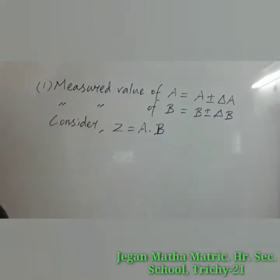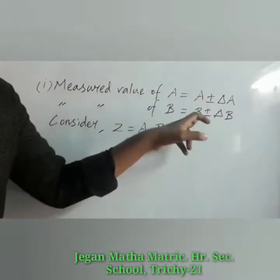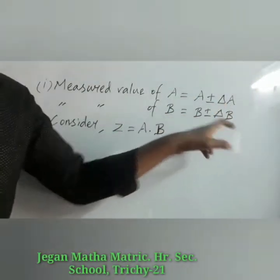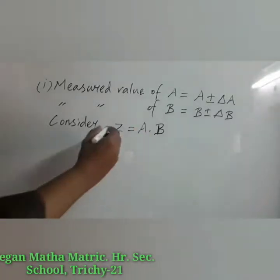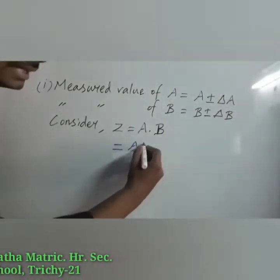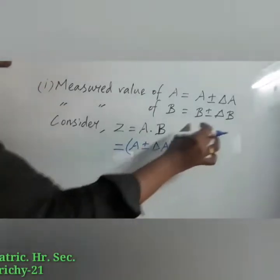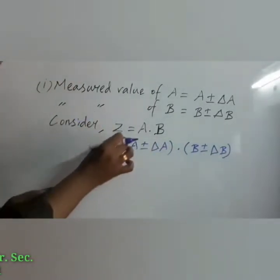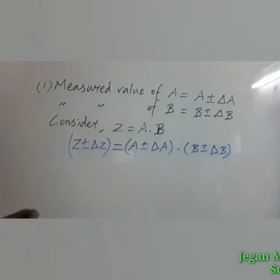Let us discuss the error in the product of two quantities. We have measured two quantities A and B, and in both measurements we have absolute errors. In quantity A there is absolute error del A, and in quantity B there is absolute error del B. We are going to take the mathematical operation of multiplication. So let Z be the product of the two quantities. Since A and B both have errors, those errors will reflect in the product Z as well, and we need to find the absolute error del Z.